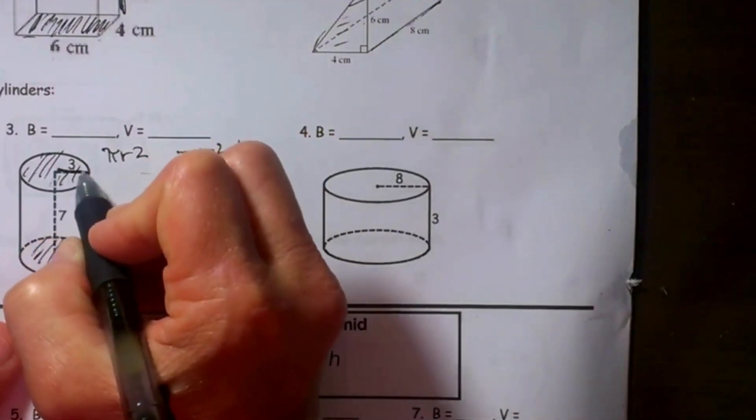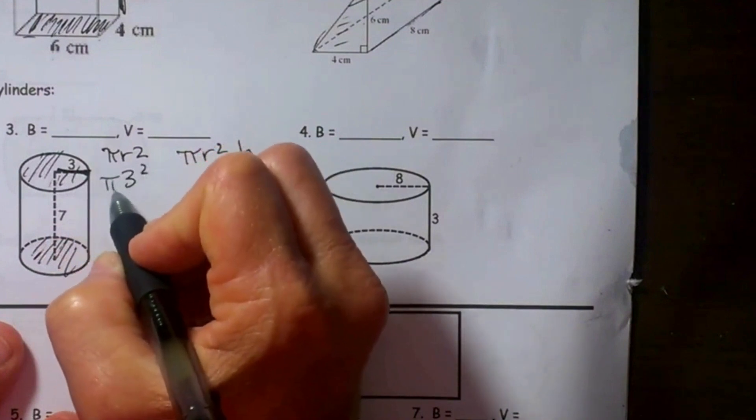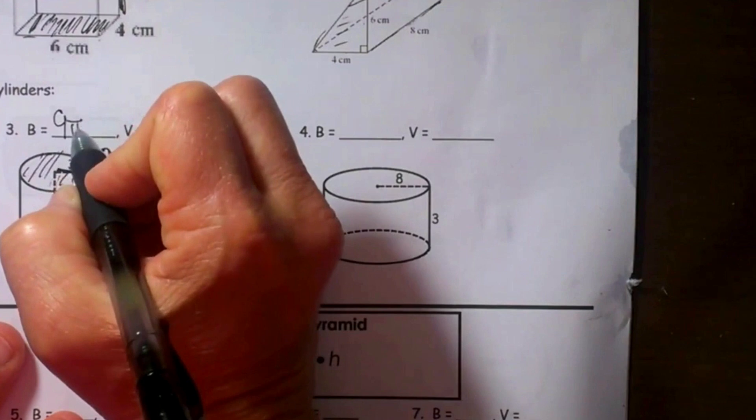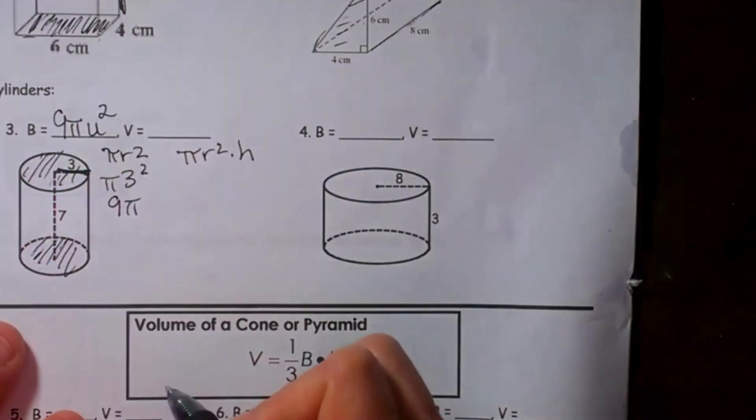So let's do the first step. Let's take our radius and square it. So 3 squared is 9. So 9π is my base area. We don't know the unit so let's just call it unit squared.